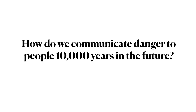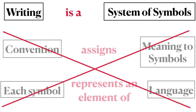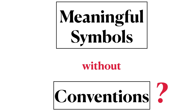We now examine a special case: specifically, how can we effectively communicate a message — specifically a message of danger — to people 10,000 years in the future? When we examine the ways of doing so, we must consider writing. Writing is a system of symbols. Could we use other systems of symbols without sharing the conventions, and without knowing what language those people will speak? Can we come up with meaningful symbols to communicate with those in the far future, with whom we do not share conventions?